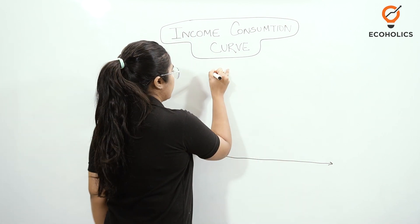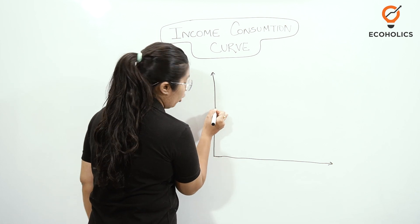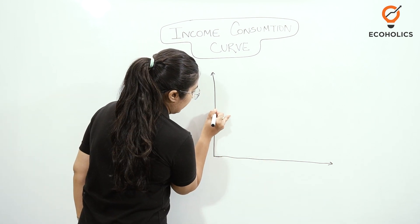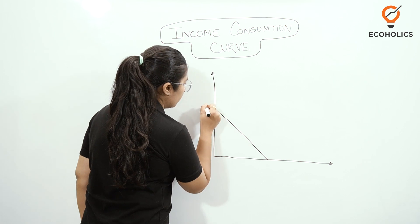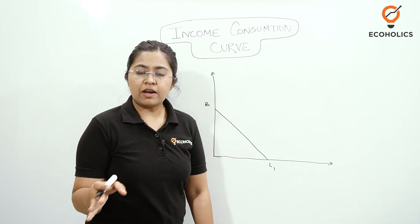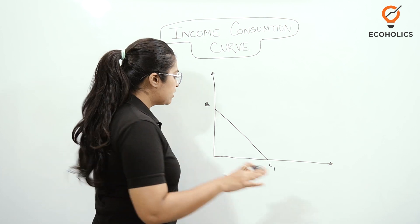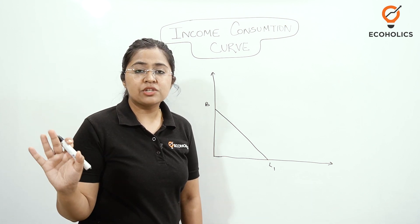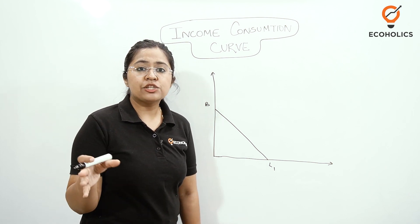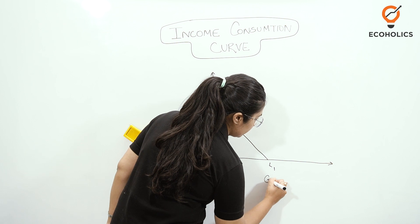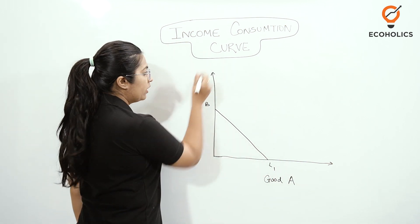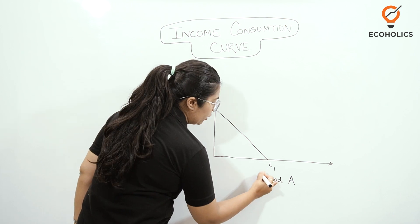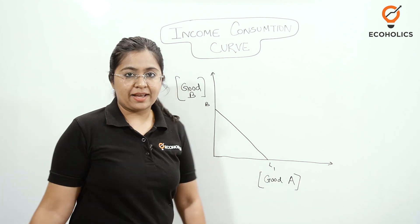On this graph we have the price line, or budget line, which represents the budget of an individual consumer. Let's say the budget line is BL1 — that is the original budget line specific to a consumer. On the x-axis we have Good A, and on the y-axis we have Good B.